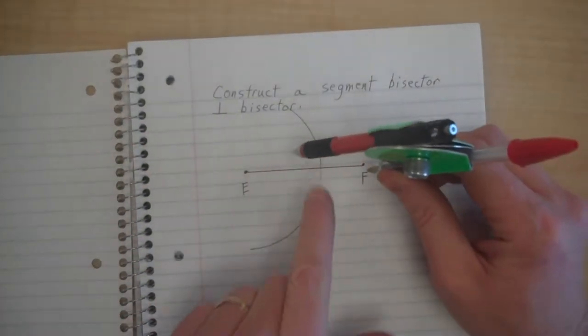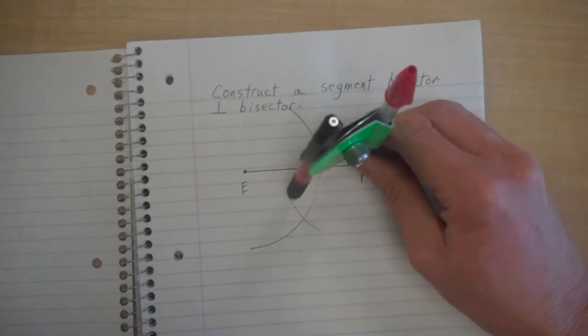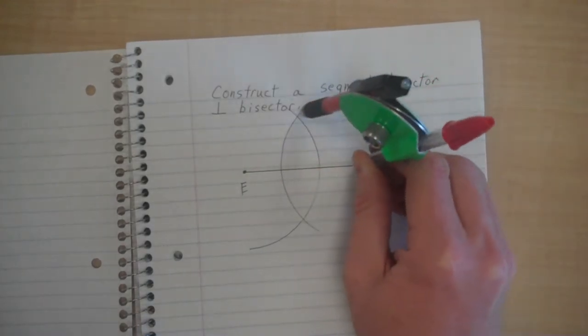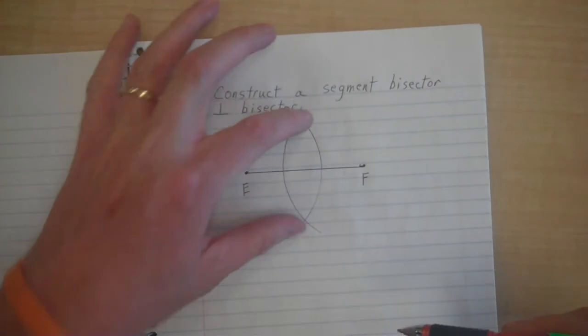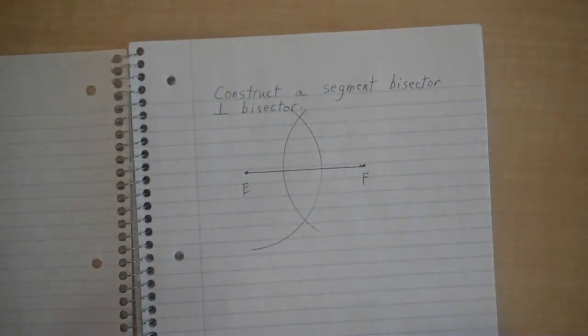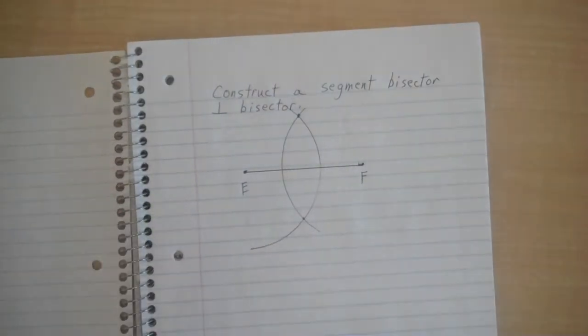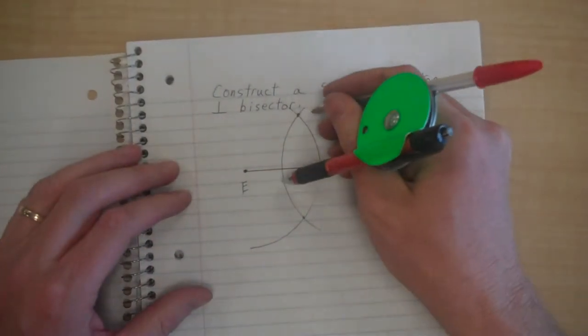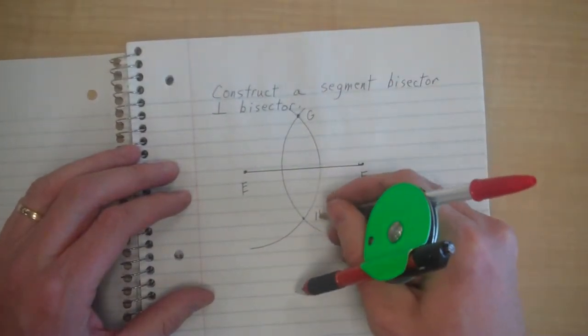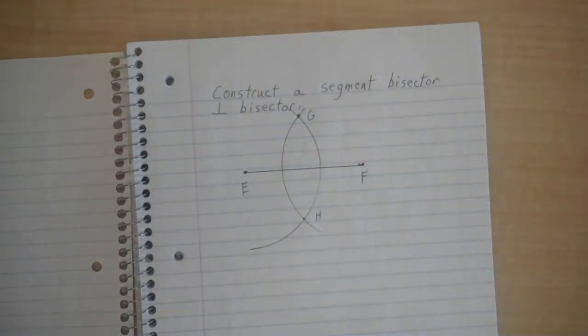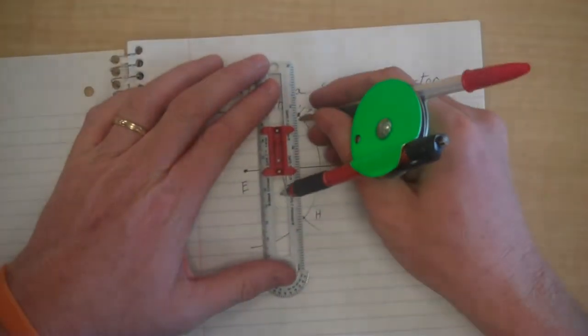At F you want to do the same thing. I did not change the setting, and I'm going to draw an arc that crosses this arc two times. So you make a football basically.